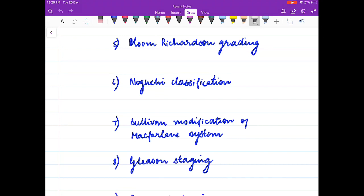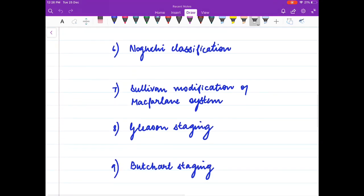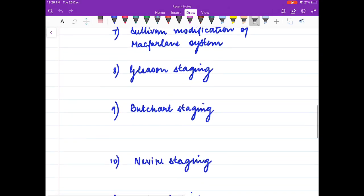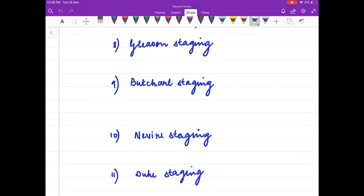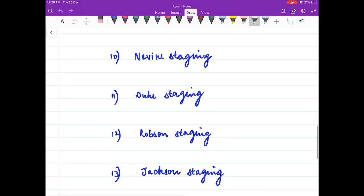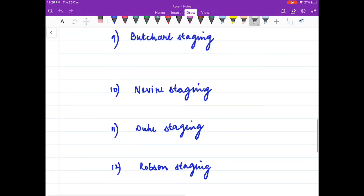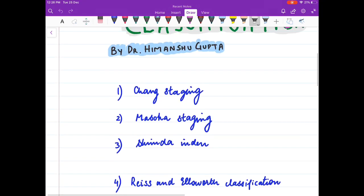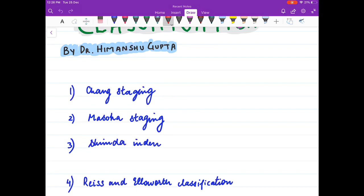Gleason staging? Butchard staging? Nevine staging? Duke staging? Robson staging? And Jackson staging? So now coming to the answers.